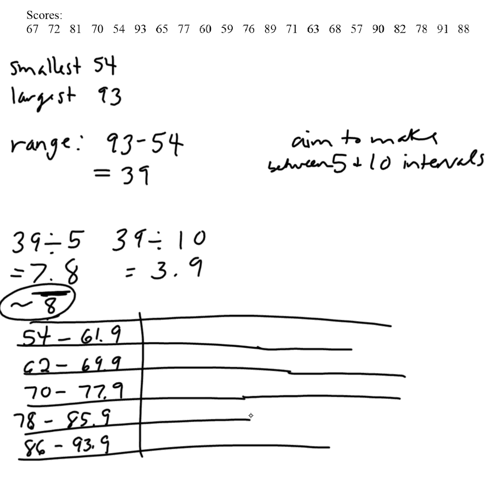So that's just a little quick way of how to choose appropriate intervals for a histogram. Start with your range. Figure out what you want. So if you want between 5 and 10 intervals, that means your interval size will be between 4 and 8. You want it round. You don't want to use decimals necessarily. So somewhere between 4 and 8, and then you choose what you want, and you can go from there.